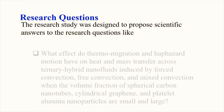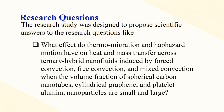(3) What effect do thermomigration and hazard motion have on heat and mass transfer across ternary hybrid nanofluids induced by forced convection, free convection, and mixed convection, when the volume fraction of spherical carbon nanotubes, cylindrical graphene, and platelet aluminum nanoparticles varies? Next is to present the empirical review. Based on the analysis of results, it is reliable and worthy to conclude the following.